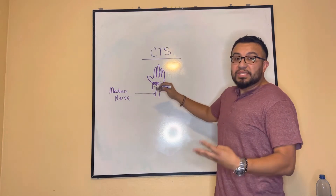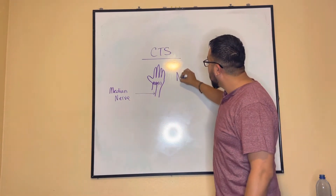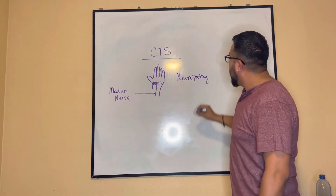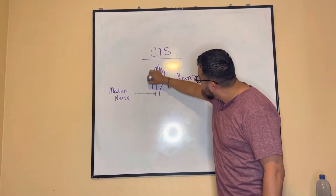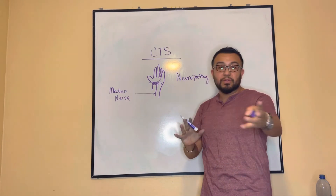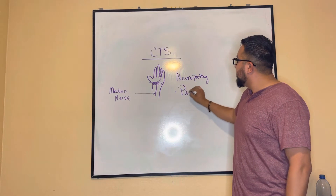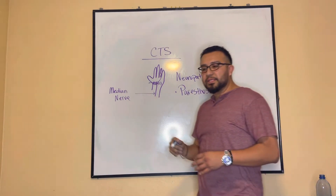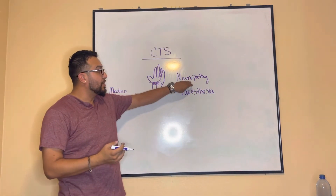You have to consider the manifestations — what's going to be part of your data collection. That's going to be neuropathy, including some paresthesia to the thumb, index, middle, and part of the ring finger. So the patient is going to have that paresthesia.